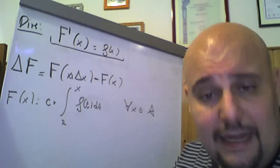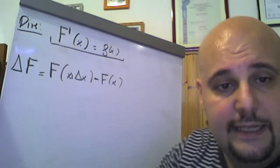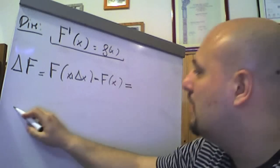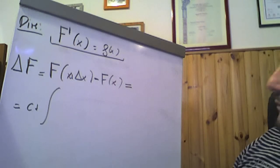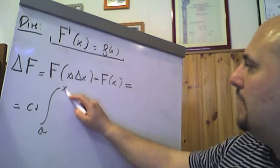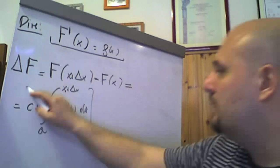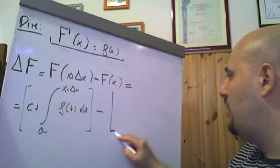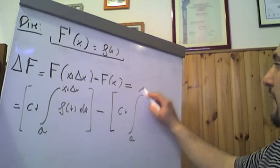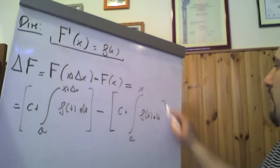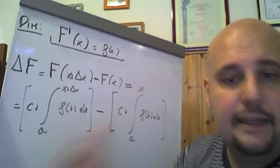Se F grande di x è c più l'integrale tra a e x di f di t dt, comunque se fissi x appartenente all'intervallo, allora possiamo dire che ΔF grande, ovvero F grande di x più Δx meno F grande di x, fa pari a c più l'integrale tra a e x più Δx di f di t dt, meno c più l'integrale tra a e x di f di t dt. Abbiamo tenuto conto della proprietà dell'additività relativa agli integrali definiti.